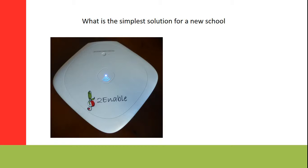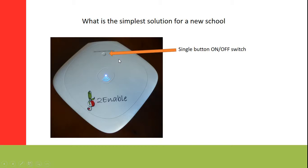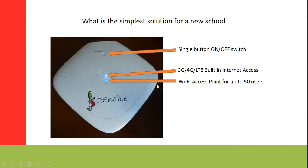To make it even simpler, this is a full-blown computer but there is no screen and keyboard. There's a simple on/off button to switch it on and off. It has built-in 3G, 4G, or LTE depending on the model. The light shown is indicating that it is connected via LTE in this case. It also has a Wi-Fi access point, so literally everything you need is in this single unit.